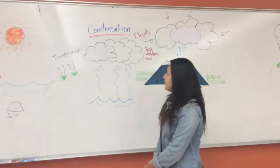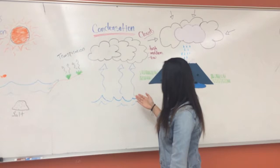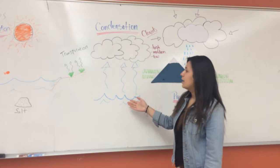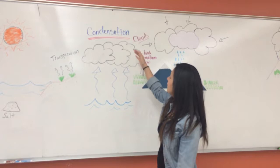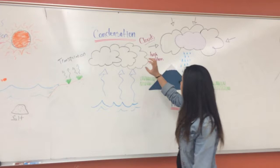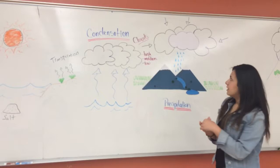The next step is condensation. Condensation is when the water, which is at a high temperature, rises up into the sky. The farther it goes up, the lower the temperature is going to be. This is going to form clouds, and the clouds are going to come together.